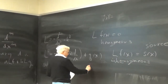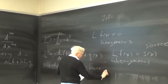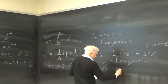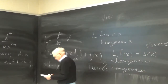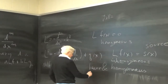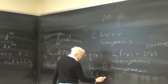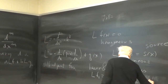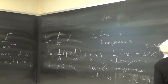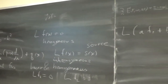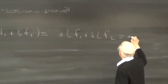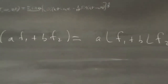If you have an equation that's linear and homogeneous, then you can add solutions. For example, if L·f₁ equals 0 and L·f₂ equals 0, then L of (a·f₁ plus b·f₂), because the operator is linear, equals a·L(f₁) plus b·L(f₂). Because it's homogeneous, each of these is zero, so this is a times 0 plus b times 0, which is just 0.